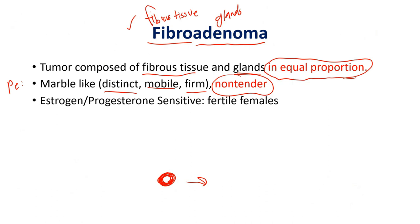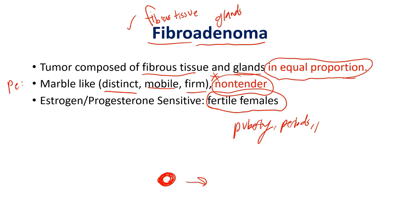Fibrocystic changes is the only tender one — 'fire-cystic' is hot/tender. Fibroadenoma is also estrogen and progesterone sensitive. It typically presents in fertile females — around puberty up through the pre-menopausal period — because they have those spikes in estrogen and progesterone. It will not typically present in a patient who hasn't hit puberty, and it also will not typically present in post-menopausal women because of the massive decrease in estrogen and progesterone. In most cases it is estrogen and progesterone limited.